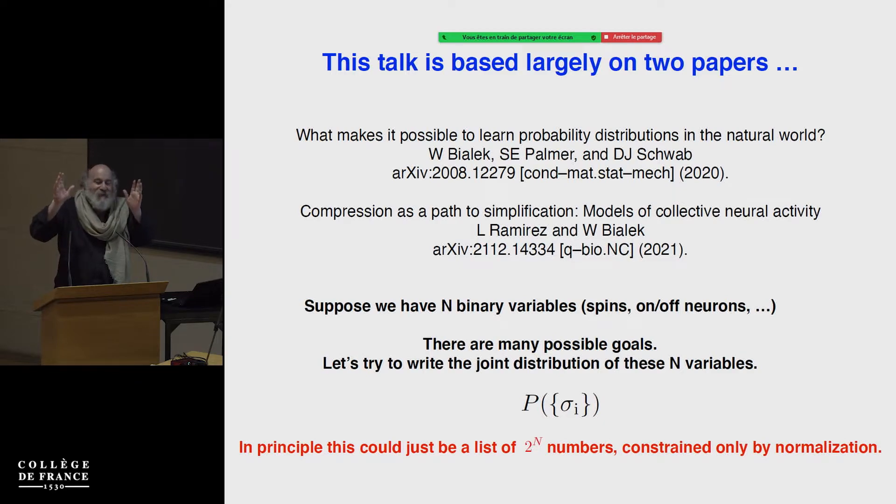There's many questions when you say, what does it mean to understand the system? That's not very well posed. So let's be very specific. I want to write down the joint probability distribution of all the variables. So this is the starting point in statistical mechanics. But of course, when you come to a system that you don't understand, you don't have an underlying Hamiltonian, you don't know that there's a Boltzmann distribution, et cetera. Just getting to the starting point of statistical mechanics is already hard.